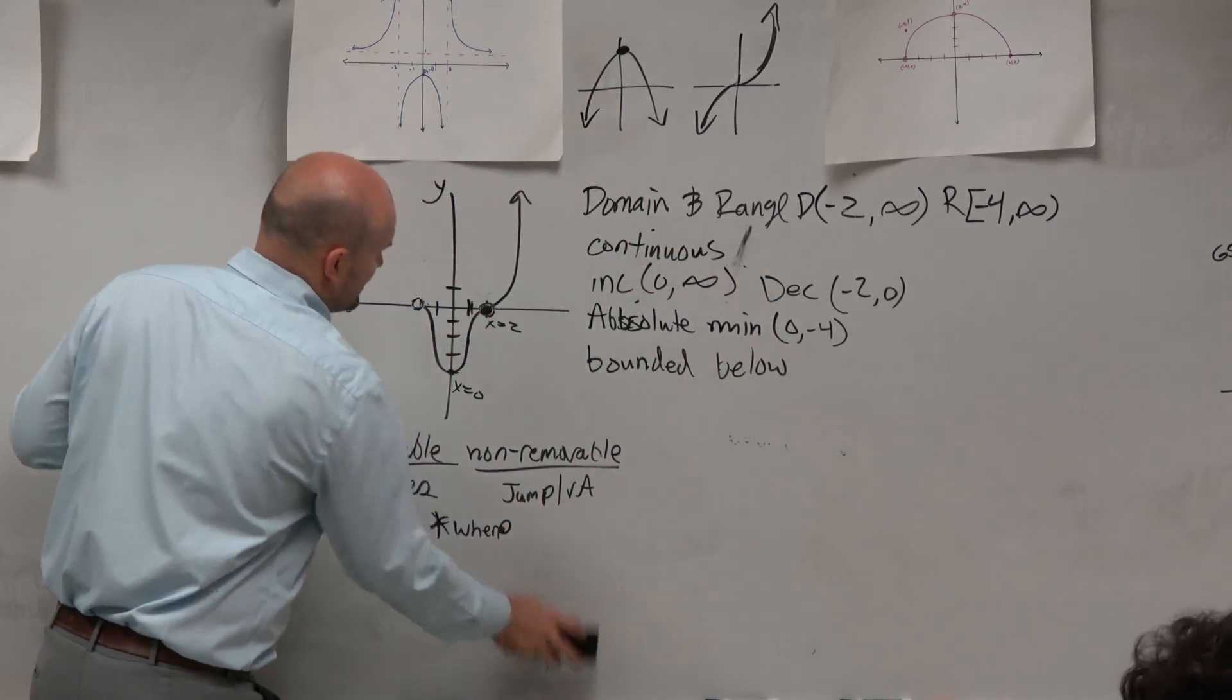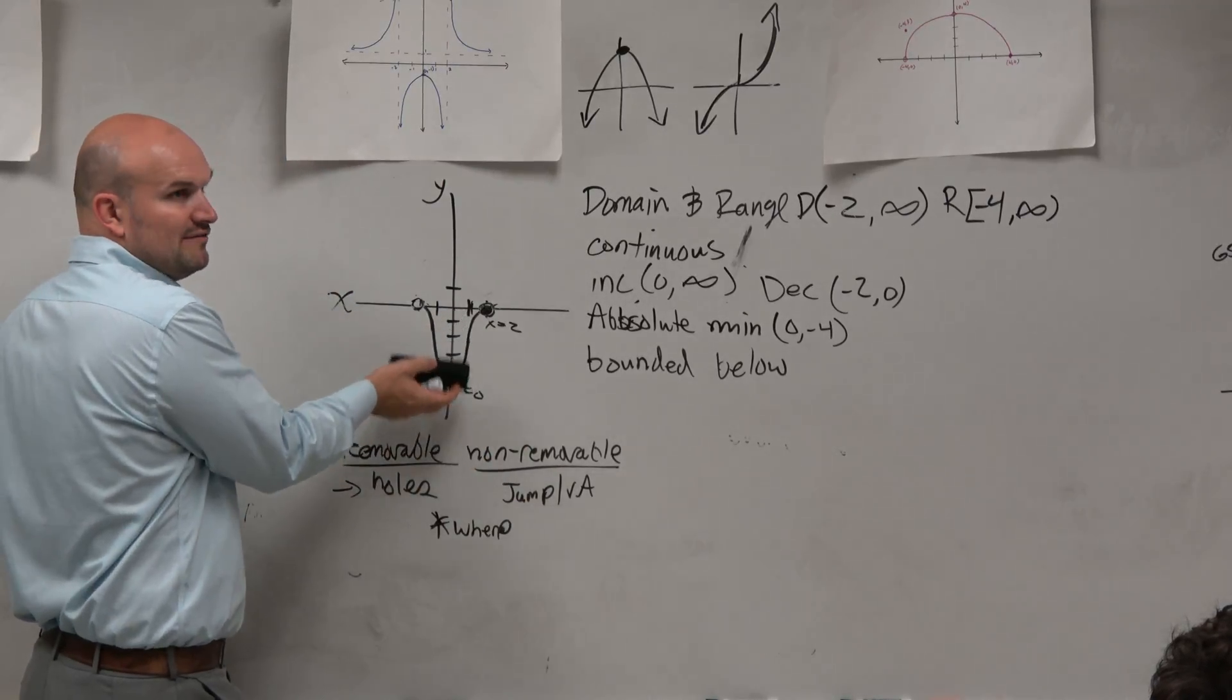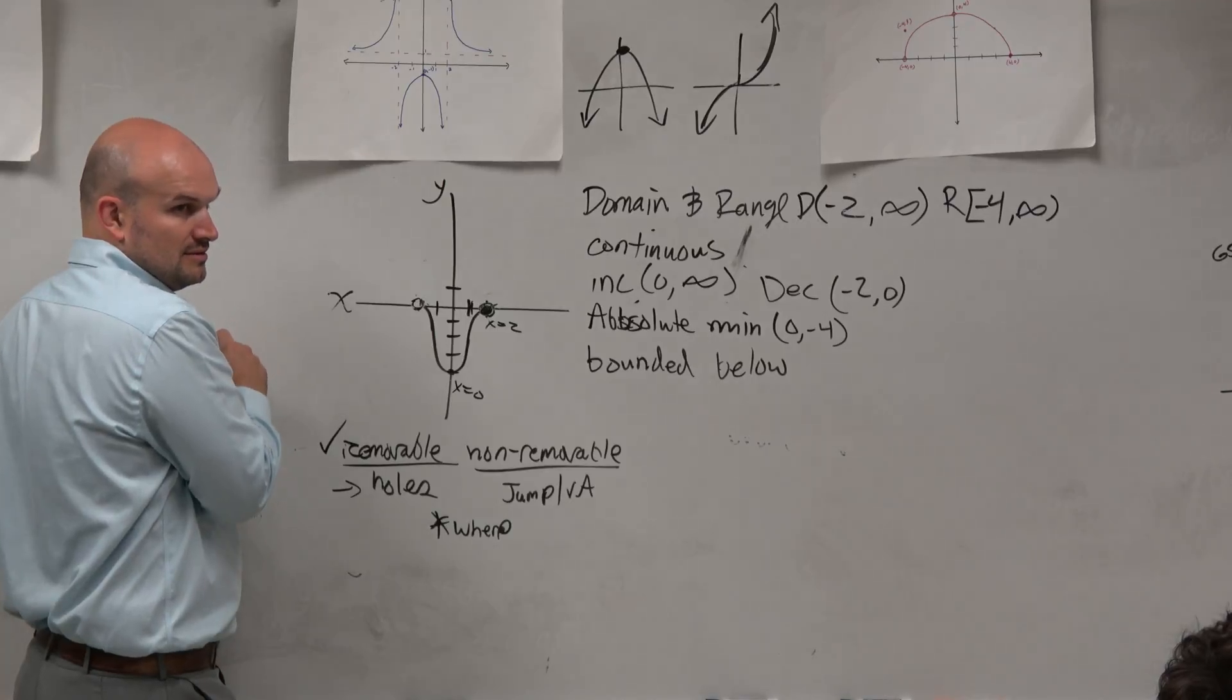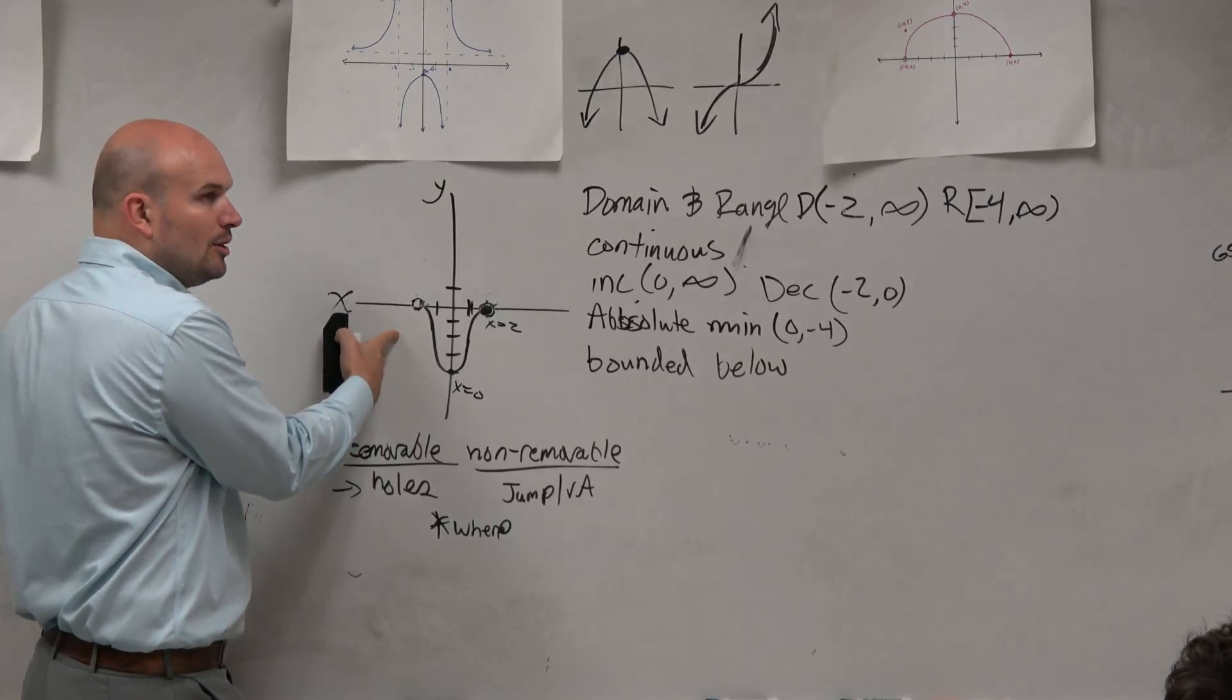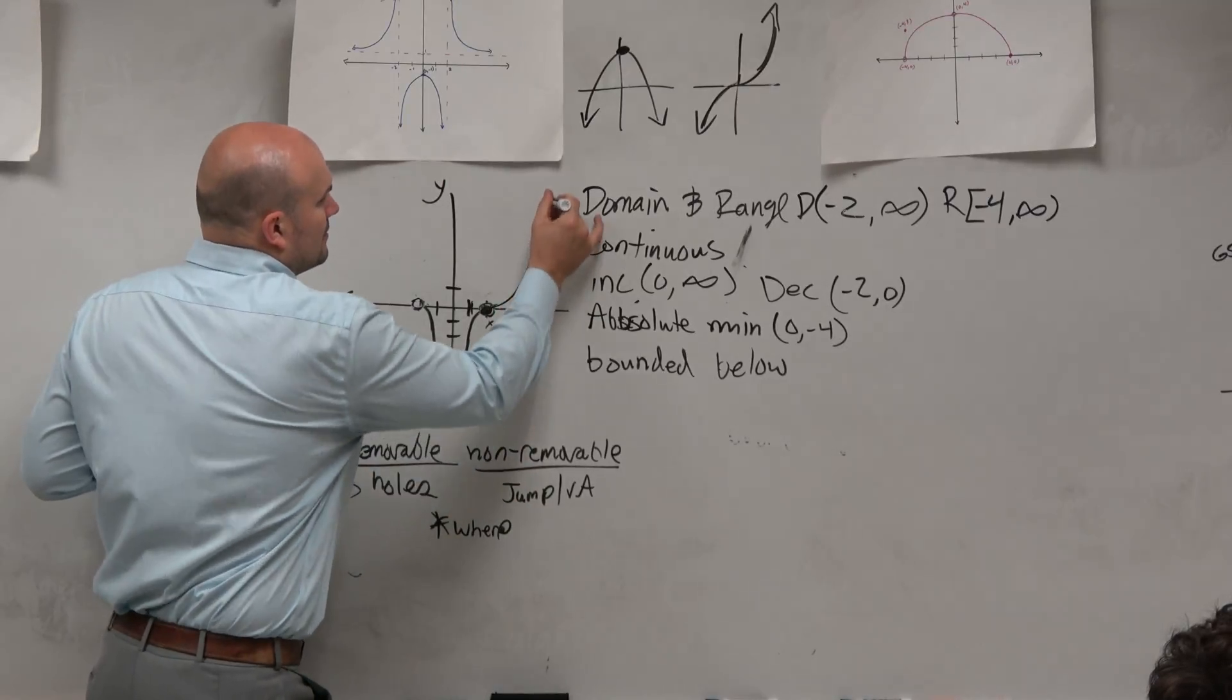And then, obviously, guys, I could just, what if I did this? Does this graph have a restriction on how high or low it is? Yeah. So this one would be what we call bounded. It's bounded above and bounded below. OK?